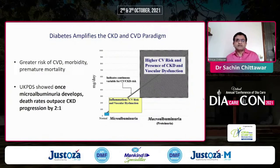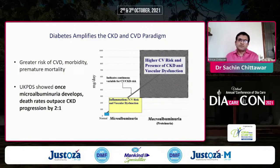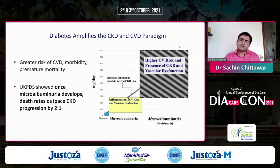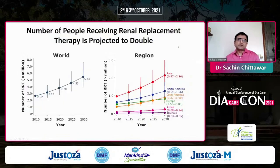Diabetic kidney disease is a leading cause of end-stage kidney disease in India, with a major share of around 60%. The morbidity is high when talking about kidney disease in India, especially in the context of diabetes. The progression from microalbuminuria to macroalbuminuria and overt albuminuria and end-stage renal disease is something we knew since long. Diabetes amplifies the CKD and CVD paradigm, increasing the greater risk of CVD morbidity and premature mortality. Once microalbuminuria develops, death rates outpace CKD progression by 2 to 1.